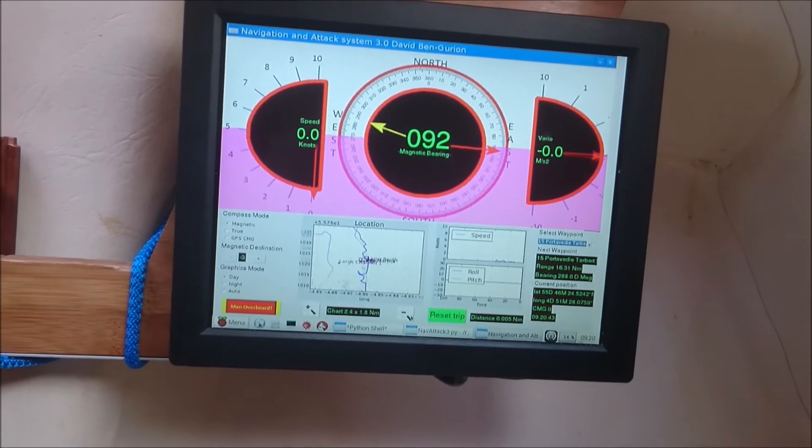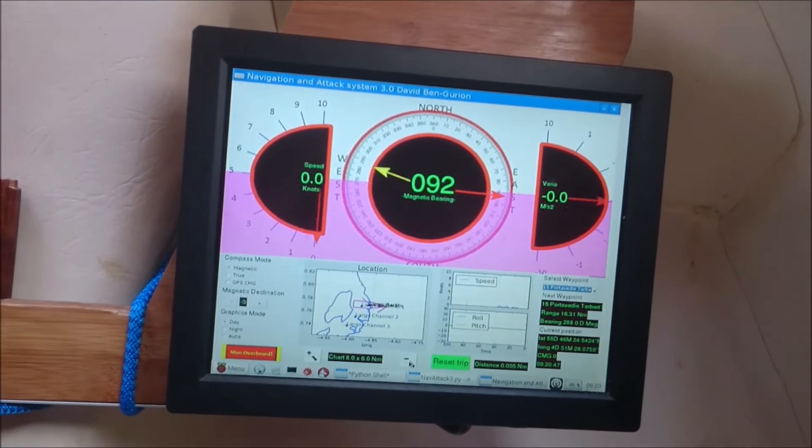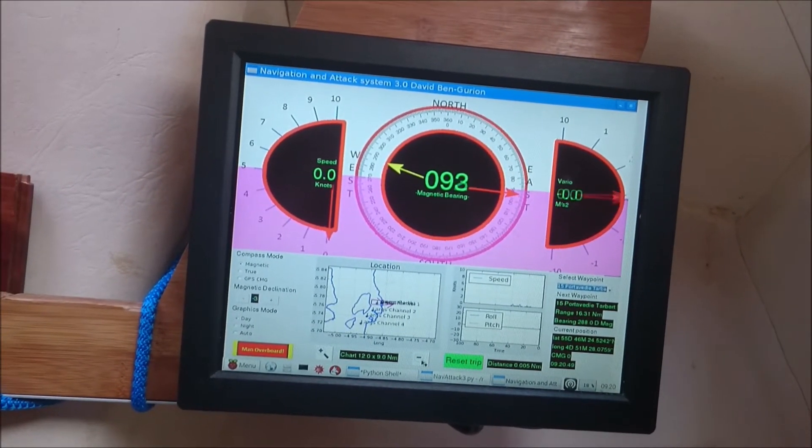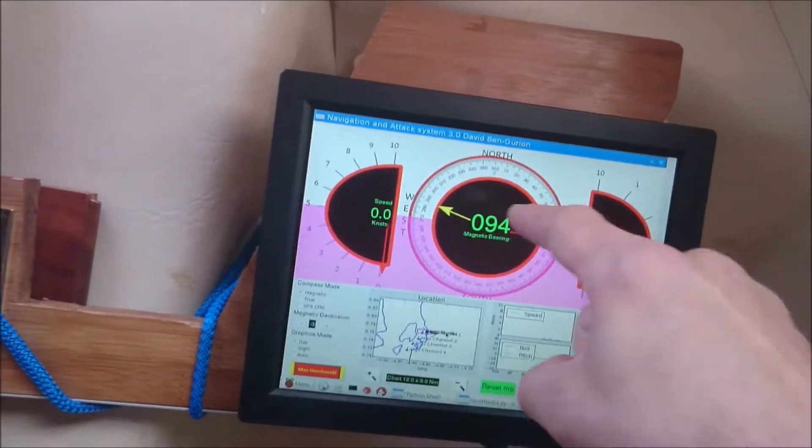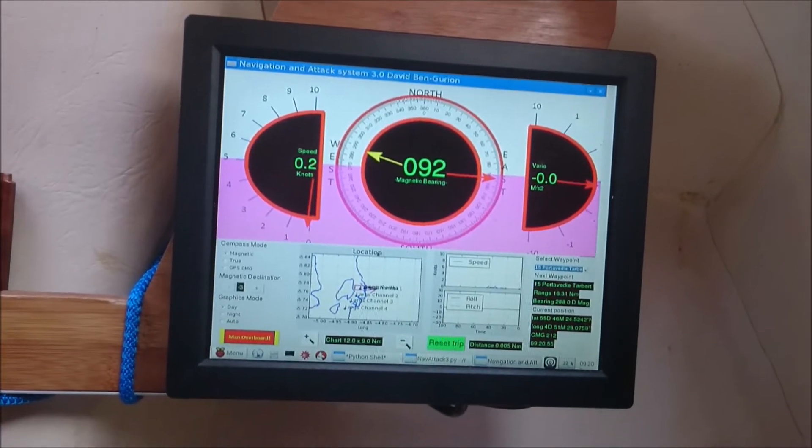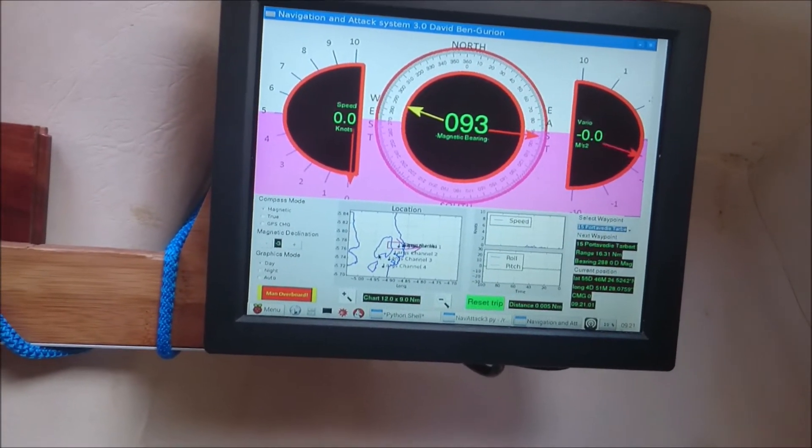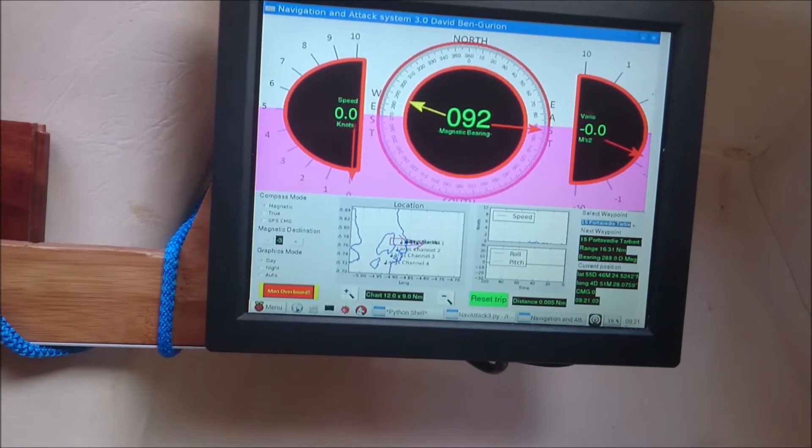So it gives you the scale there on the bottom. And the way I got the coastlines in was I wrote a little Python script that allowed me to download charts off Navionics and literally just pick points on them, which then went into a data file. And this is just plotted with the PyLab code. It'll also show you your wake as well.